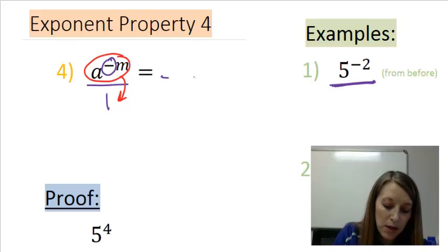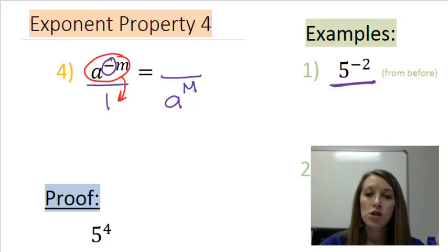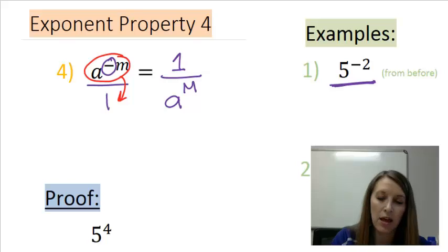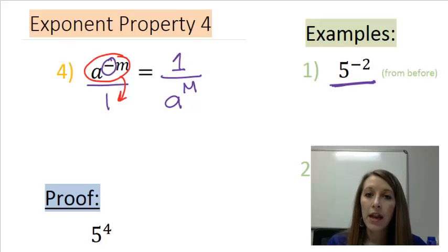That leaves me with a to the positive m in the basement of my house. Whenever they move floors, that makes them happy and that gives them a positive exponent in the floor that we moved them to. In the numerator, I have to fill in the void, so we fill that in with a 1.